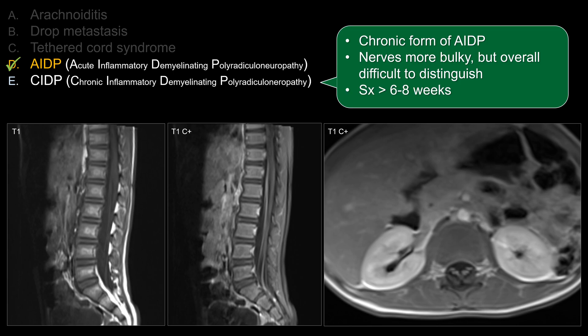If you suspect AIDP but the patient has had symptoms lasting more than six to eight weeks, then perhaps you're looking at the chronic form — CIDP.